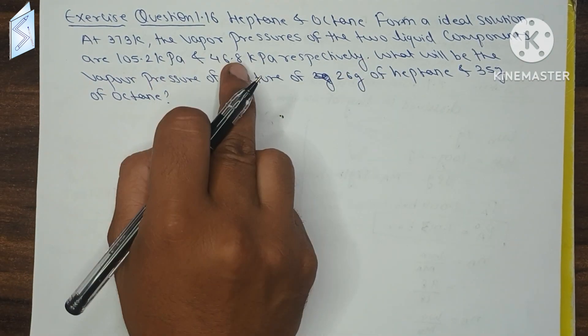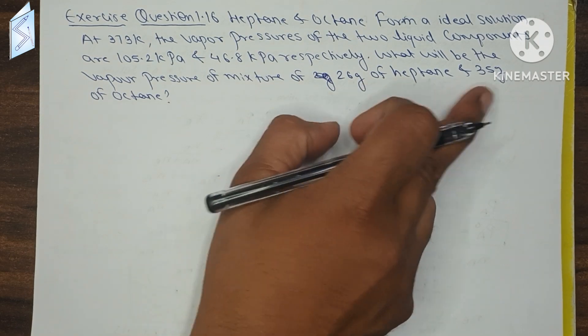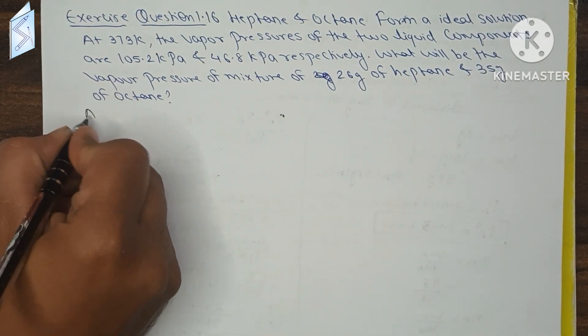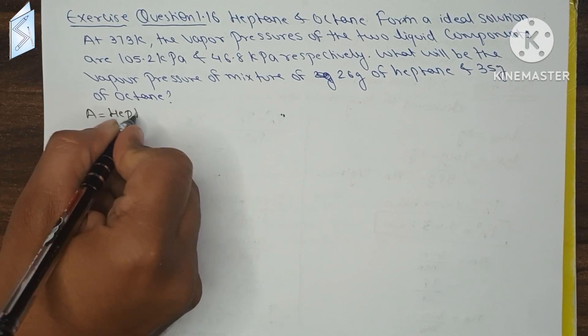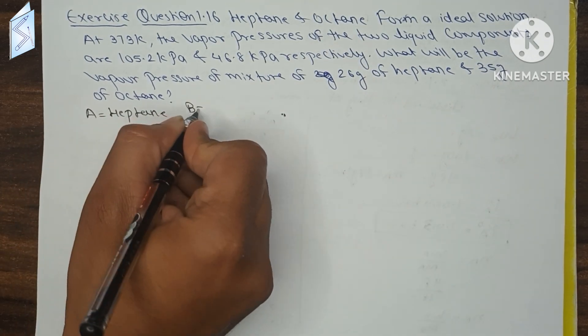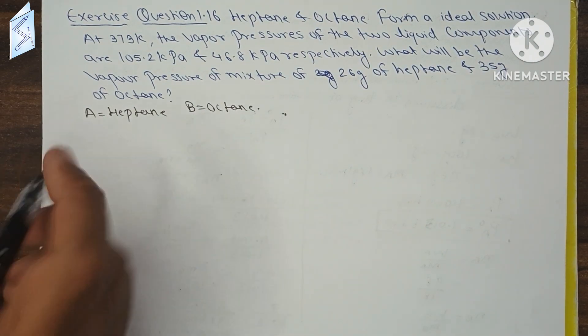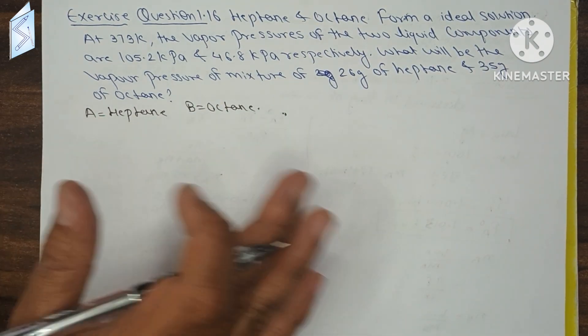What will be the vapor pressure of the mixture if 26 g of heptane and 35 g of octane are mixed? So I am taking A for heptane and B for octane. If we write it, it will be good. I have to write A heptane and B octane.